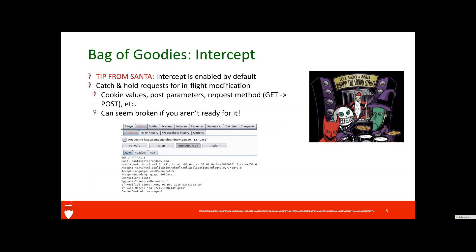Let's dig into some of the bag of goodies that make Burp so useful. One of the major features you'll notice right away is that Burp has a feature called Intercept. A tip Santa wanted me to include: Intercept is enabled by default. For people new to Burp, this can be a little tricky because Intercept catches and holds your request so that you can modify it in flight. This can be things like cookie values, post parameters — you could even swap the entire request method from a GET to POST. This can seem broken if you don't know about it: you make a request in your browser, Intercept catches it in Burp's proxy, and you just see the little wheel in your browser spinning, waiting for Burp to release the request. I've seen more than a few people get caught up at this step — just know it's working as it should.